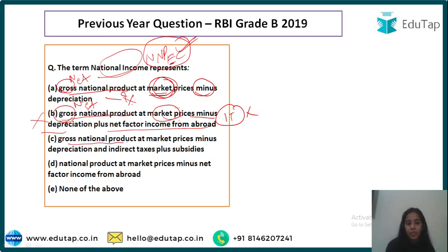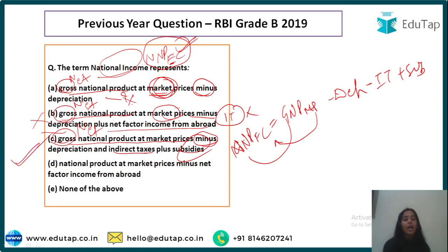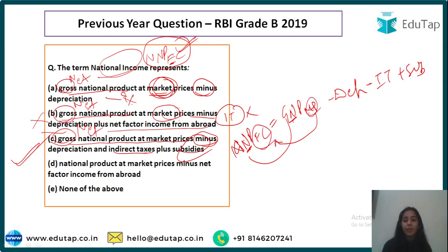The correct option is GNP at market prices minus depreciation minus indirect taxes plus subsidies. Gross to net: minus depreciation. MP to FC: minus indirect taxes plus subsidies. National is the same in both, so no need for net factor income from abroad. This gives NNP FC, which is national income — the correct answer.